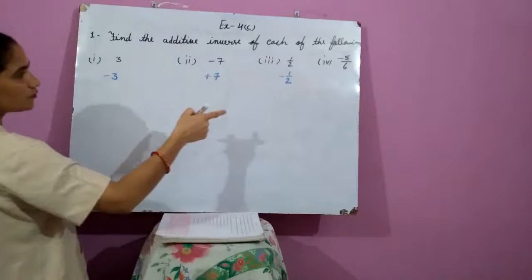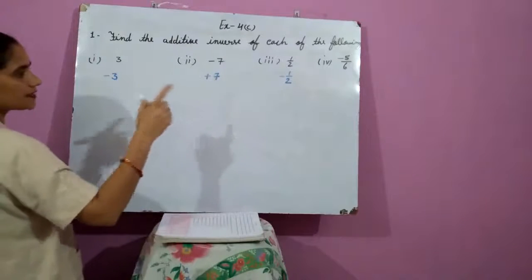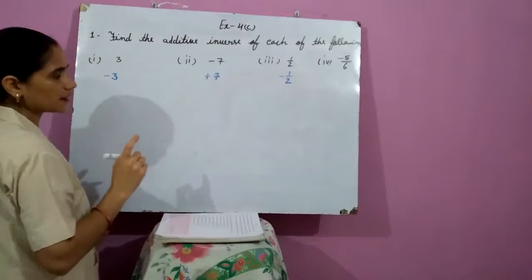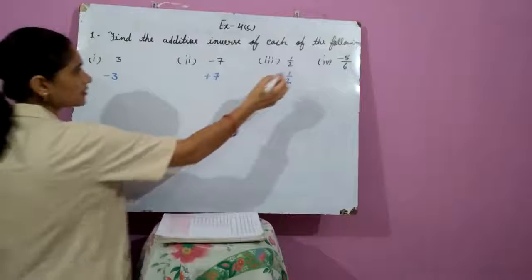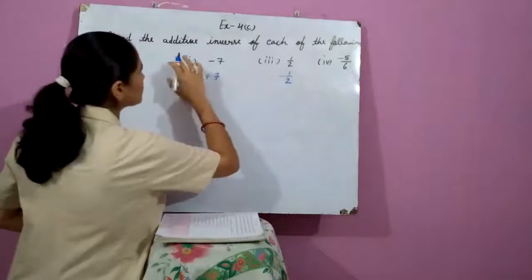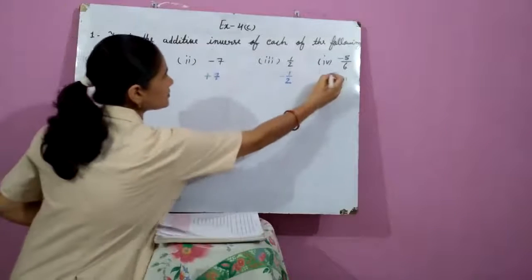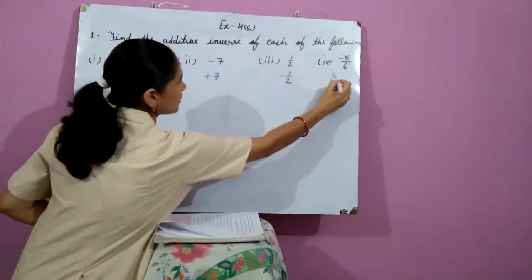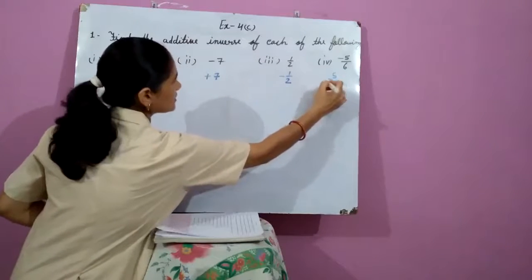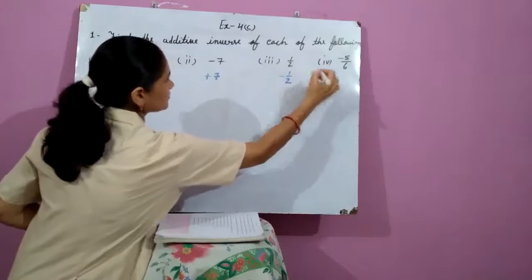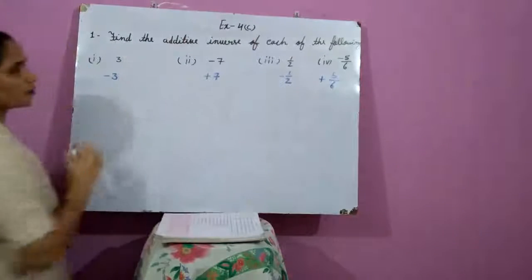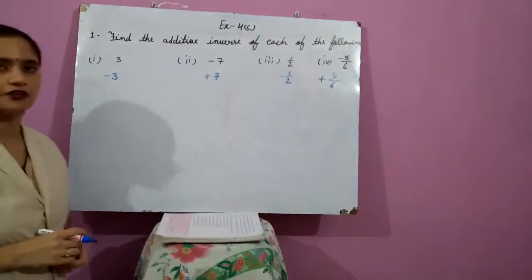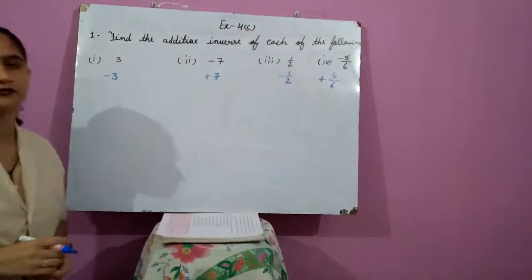The fourth part is minus 5 upon 6, and the additive inverse is plus 5 upon 6. The last part is minus 6, and its additive inverse is plus 6.